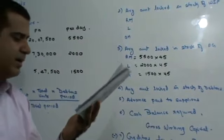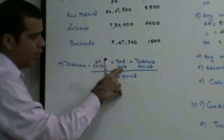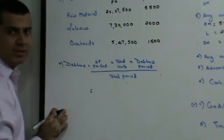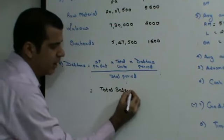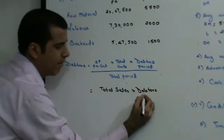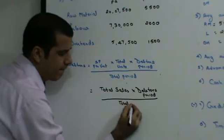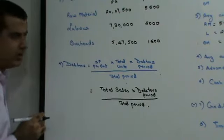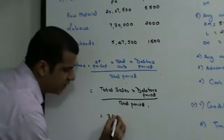Next, credit period allowed by debtors is 60 days. Now let's come to debtors. Neither have they given you selling price per unit nor have they given you total units. But selling price per unit into total units is nothing but total sales.